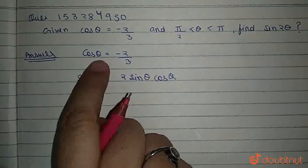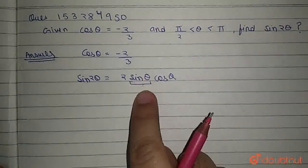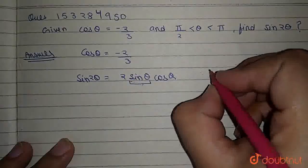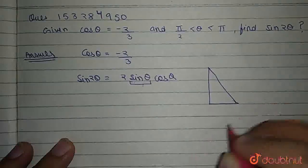Now, we have given the value of cos θ, but we need to find the value of sin θ. So, what we do is, we find it using the Pythagorean property.